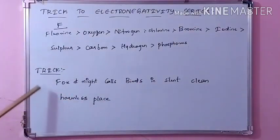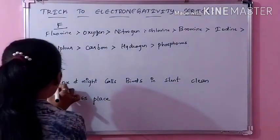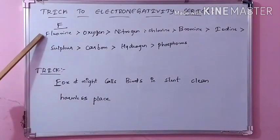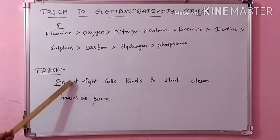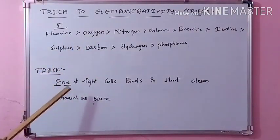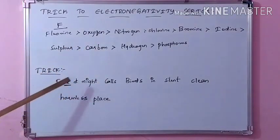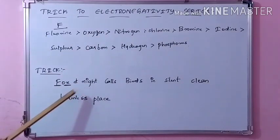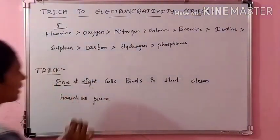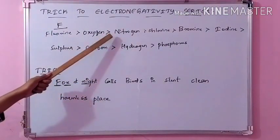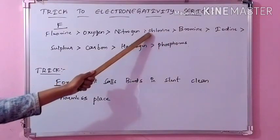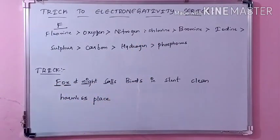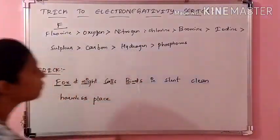How does this relate to our trick? The first word 'Fox' — F — is nothing but your fluorine. And next is 'ox' from 'Fox' — that is your second term: oxygen. And next is 'night' — from that you take N — that is nitrogen. And then from 'calls' you take C and L — this indicates your chlorine. And then 'birds' — from here you take Br — that is your bromine.